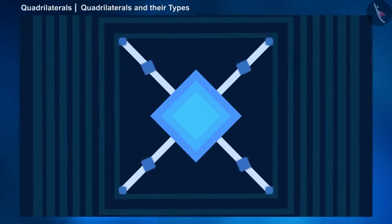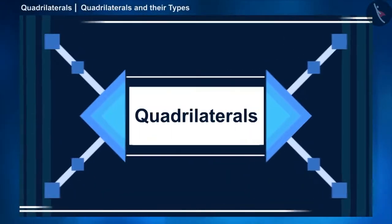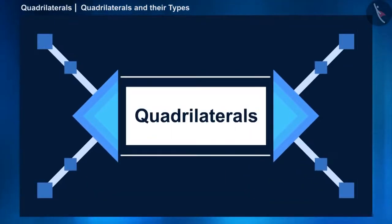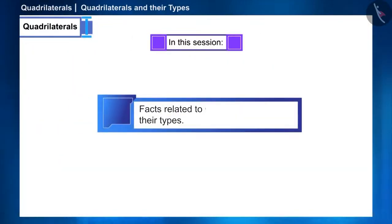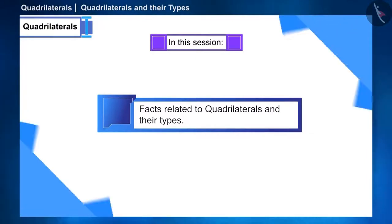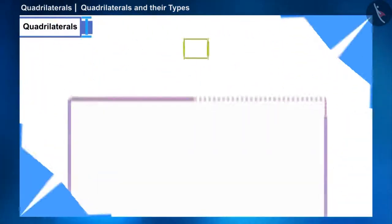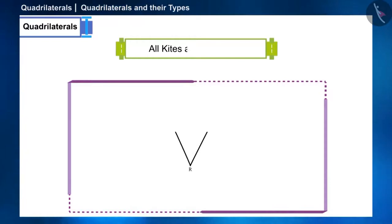Hello friends, welcome to this session on quadrilaterals. In the previous session we learned about quadrilaterals and their types. Today we will discuss some facts related to the same. Let's start with our first question: all kites are rhombus — answer whether this statement is true or false.